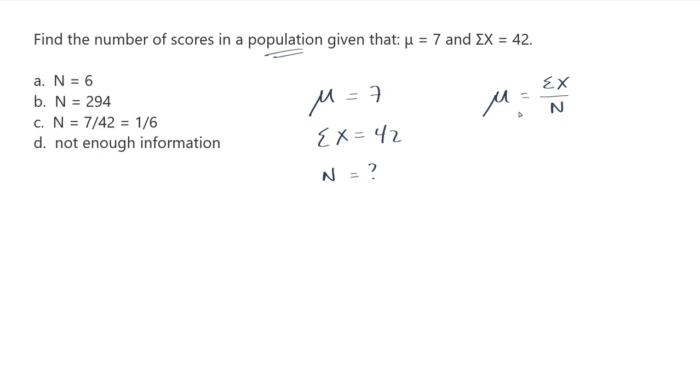Now this formula is set up to give us, to calculate what the population mean is. But of course we already know that, we already know that it's 7, and we already know what the top of the fraction is, it's 42. What we don't know is n, and this is what we want to isolate.